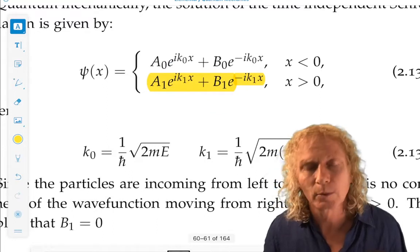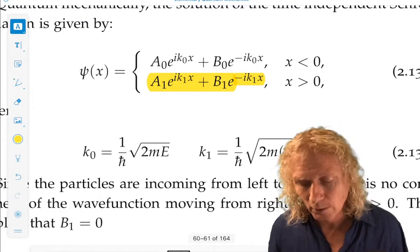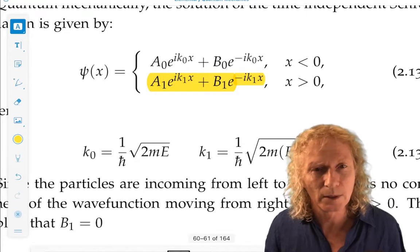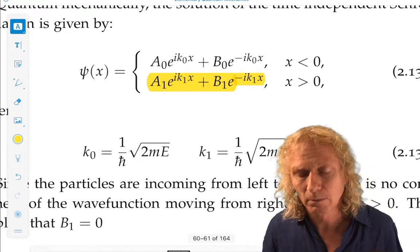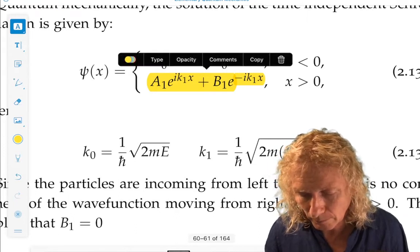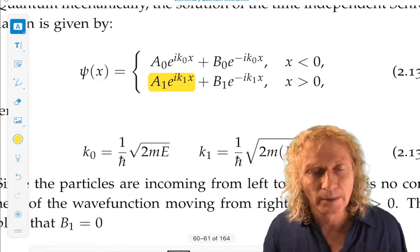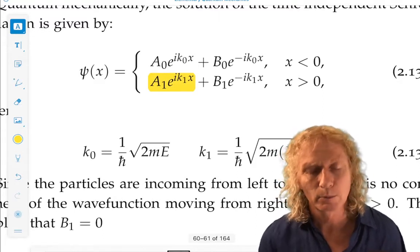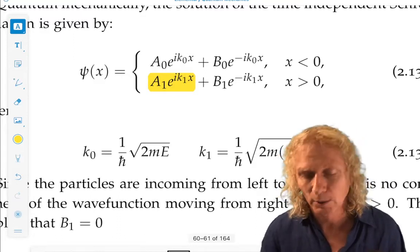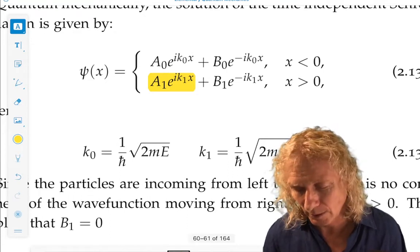And we have this term for x greater than zero. We assume in that region, because particles start from minus infinity and move towards plus infinity left to right, we assume in this region we only have particles that move from left to right. That is, they're only particles that are transmitted, not reflect, not moving backwards. The reflection has been taken care of, plus the possibility of reflection has been taken care of in this term.